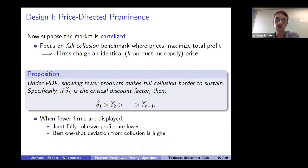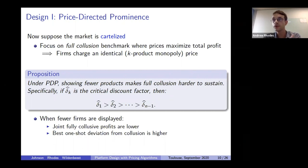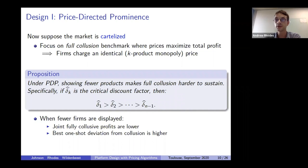Conditional on using PDP, as we display fewer firms, this critical discount factor increases, and the range of delta for which full collusion is sustainable decreases. A more aggressive implementation of this policy makes it harder for firms to sustain full collusion. The intuition comes in two parts: first, if fewer firms are shown, fully collusive (monopoly) profits are lower, so each firm's benefit of sticking with the agreement is lower. Second, each firm's optimal deviation payoff is higher when fewer firms are displayed, because you face less competition, so demand conditional on deviating is higher.